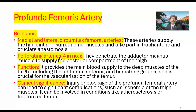The perforating arteries are typically four in number, though in some individuals there may be three or five. They penetrate the adductor magnus muscle to supply the posterior compartment of the thigh.